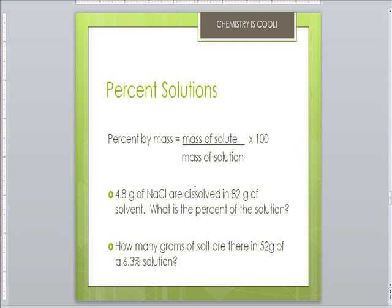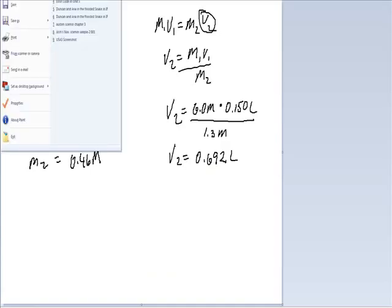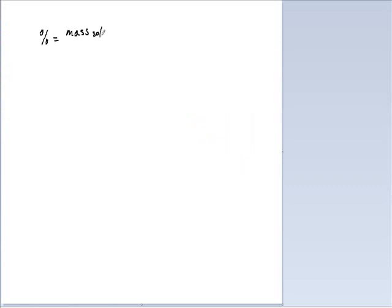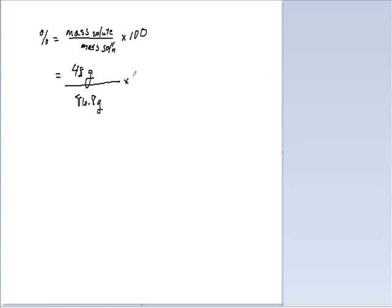You have 4.8 grams of sodium chloride dissolved in 82 grams of solvent — what's the percent of the solution? Percent equals mass of solute divided by mass of solution times 100. Our mass of solute is 4.8 grams. Our mass of solution is the total: 4.8 plus 82 equals 86.8 grams — don't just use 82. Multiply by 100 and our final answer is a 5.5% solution.